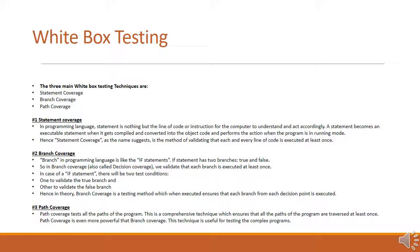The three main white box testing techniques are statement coverage, branch coverage, and path coverage. Statement coverage goes line by line of code and checks all lines in the program. Branch coverage can be thought of as a tree with two branches — for example, in an if-statement with a yes and a no, it would go to the yes branch and verify that code works properly, then go to the no branch and verify that code works properly. In branch coverage, the test covers all paths of the program.